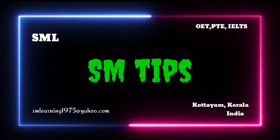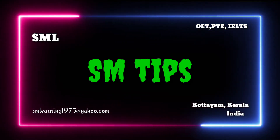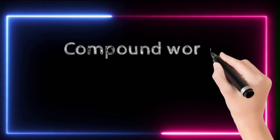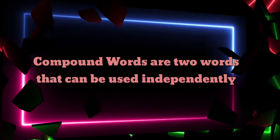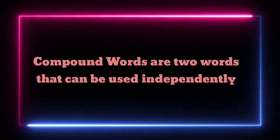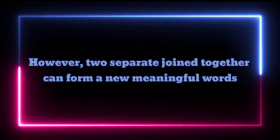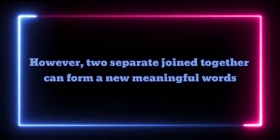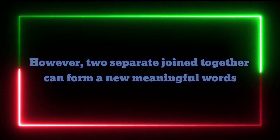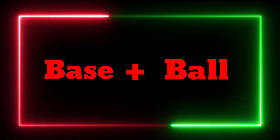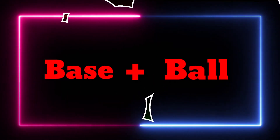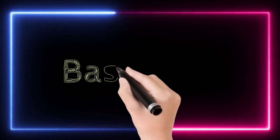Welcome to SM Tips. Do you know what compound words are? Compound words are the most commonly used words in the English language. Compound words are those words which are two words that can be used independently, however when joined together they form a new word. For example, 'baseball' — 'base' is one word and 'ball' is another word, and when joined together it gives a full meaning, so it is said to be a compound word.